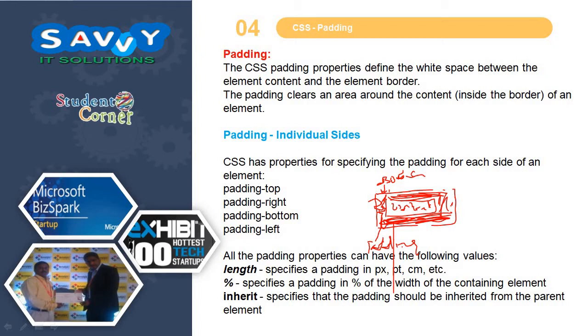Padding individual sides: CSS has properties for specifying the padding for each side of an element — padding-top, padding-right, padding-bottom and padding-left.